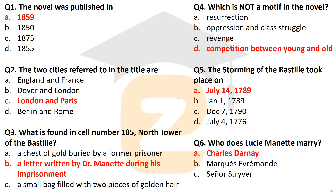The next question: the storming of the Bastille took place on July 14, 1789. This was the time of the French Revolution — on this day in 1789, the French Revolution happened in France.